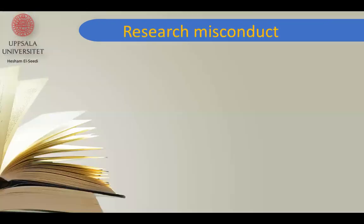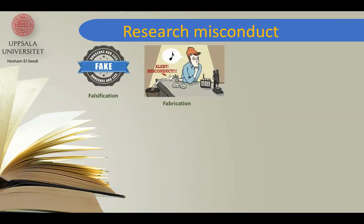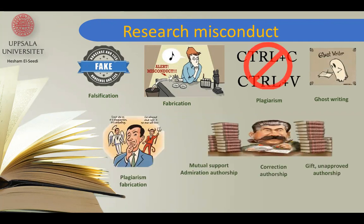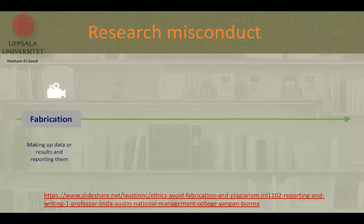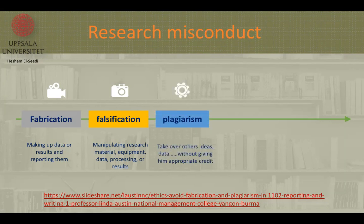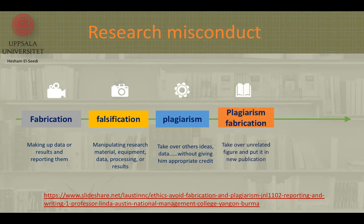This builds up the trust of the scientist. What about falsification, fabrication, plagiarism, and ghostwriting? These are really very bad mistakes. Fabrication means making up data or results and reporting them. Falsification is the manipulating of research material, equipment, data processing, or results. Plagiarism is a very serious problem — taking over other ideas or data without giving appropriate credit. Fabrication also includes taking an unrelated figure and putting it in a new publication.